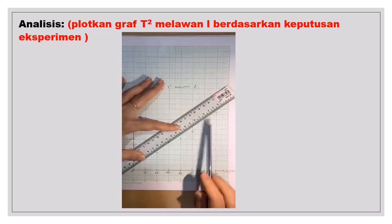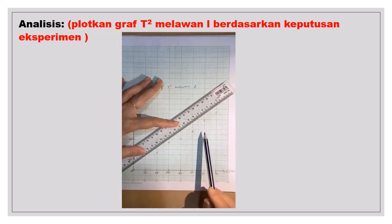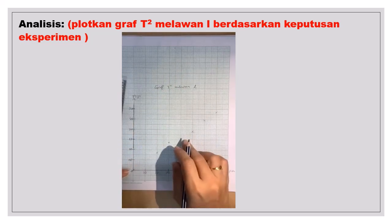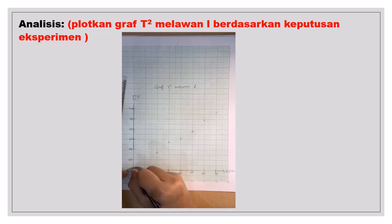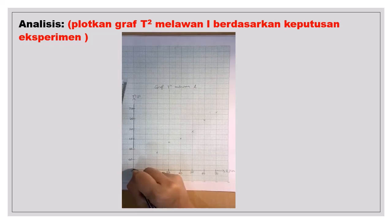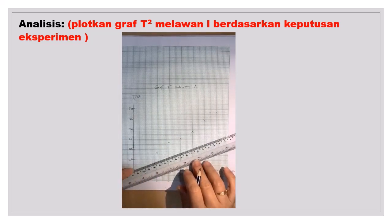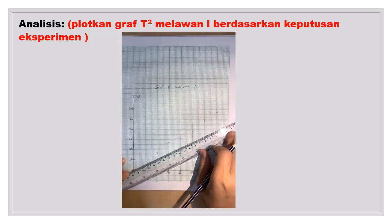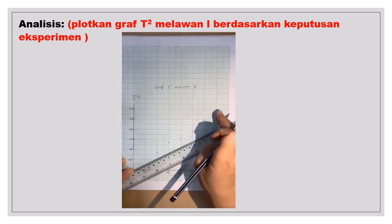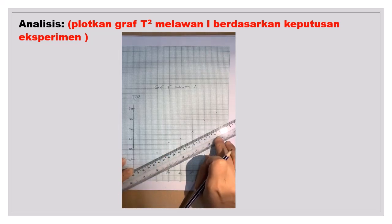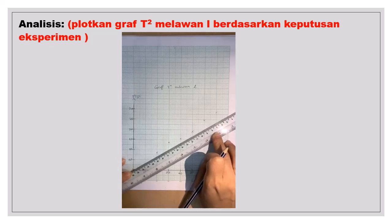Jadi kamu boleh ambilkan, sebab kita tahu bahawa T kuasa 2 melawan L, dia mesti melalui kosong-kosong. Jadi cikgu ambilkan satu titik di sini. Jadi kamu letakkan pembaris kamu melalui kosong-kosong. Kemudian kamu carikan mana satu titik yang kamu nak sambungkan. Tak semestinya titik yang terakhir. Tak semestinya titik yang paling awal ini. Tapi kamu kena pilihkan. Bagaimana anda pilihkan ialah pastikan. Kamu kena pastikan garisan yang anda lukiskan mesti seimbang.